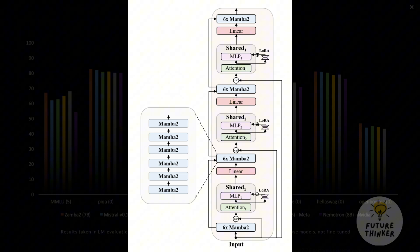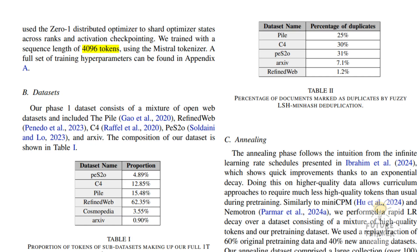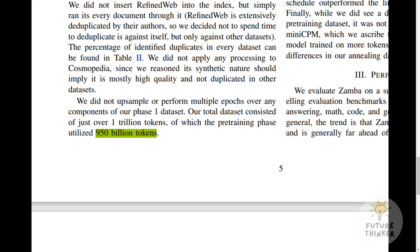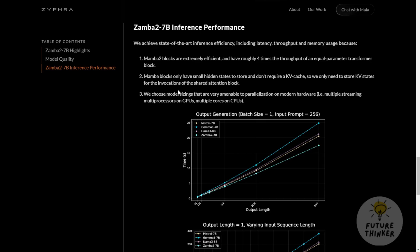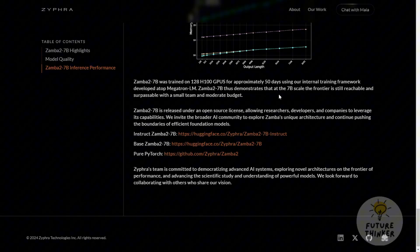For the tech specs, Zamba packs 7 billion parameters and processes sequences up to 4,096 tokens long. Trained on 128 H100 GPUs for 30 days, Zamba uses advanced techniques like data parallelism and tensor parallelism to handle its vast computations. The training was done in two phases: first, pre-training on 950 billion tokens from open web datasets, and second, fine-tuning on high-quality instruct datasets. This two-phase approach balances broad knowledge with specialized understanding, setting Zamba apart.